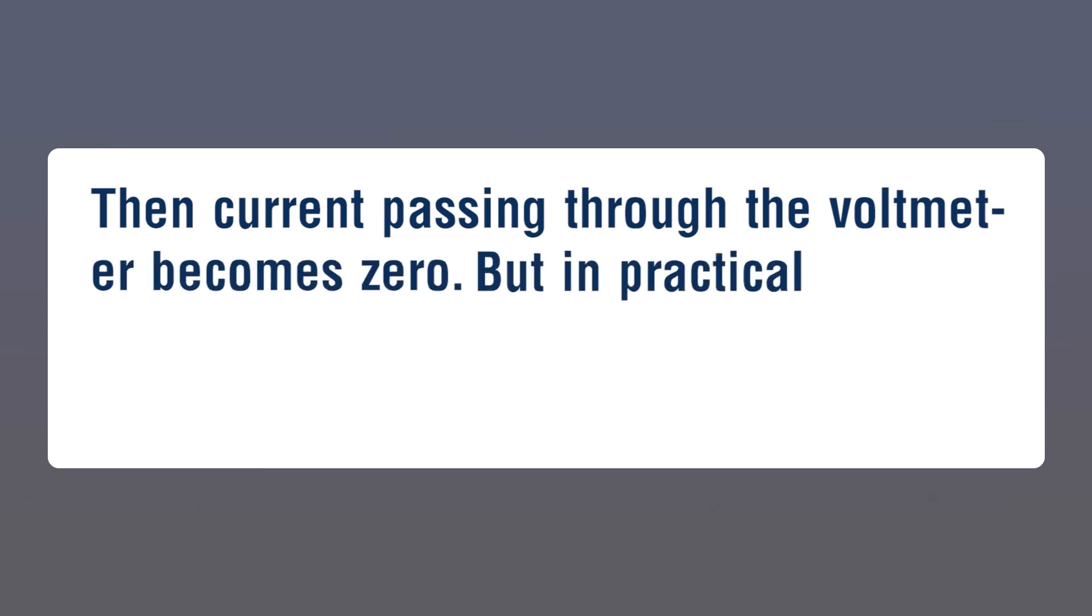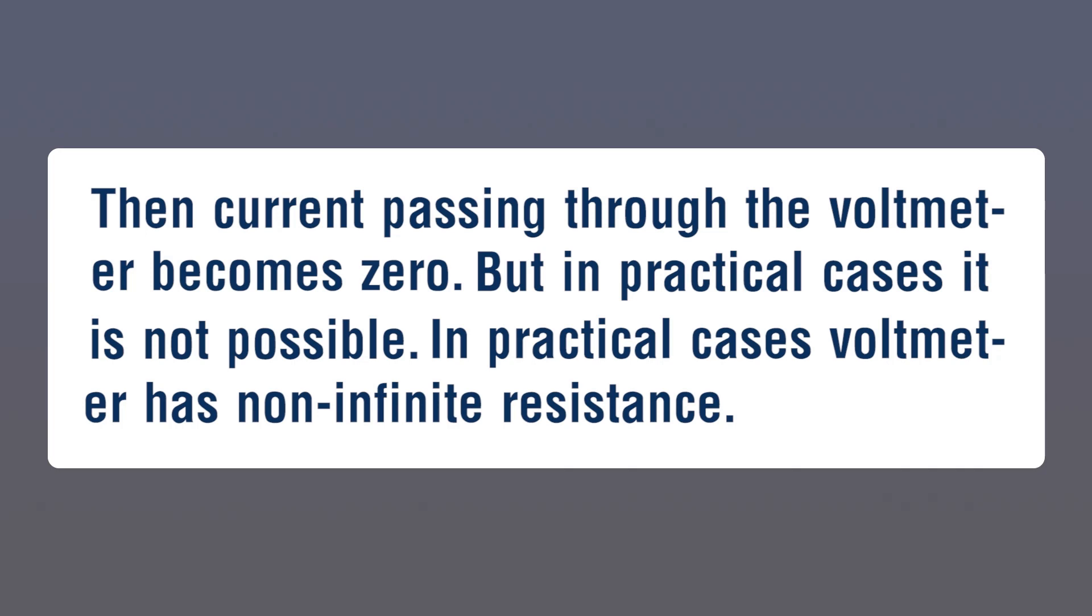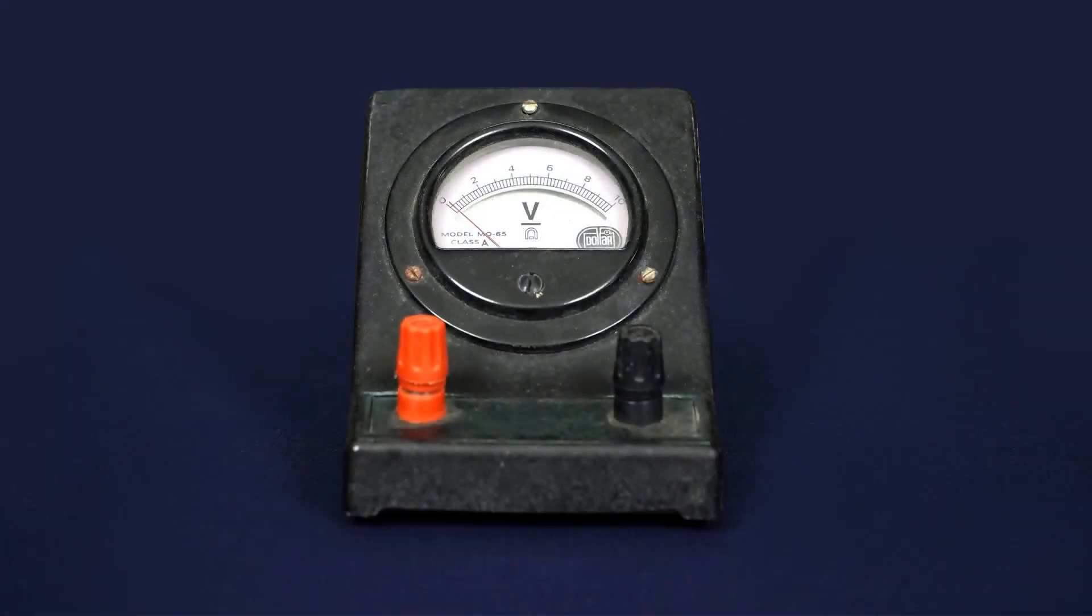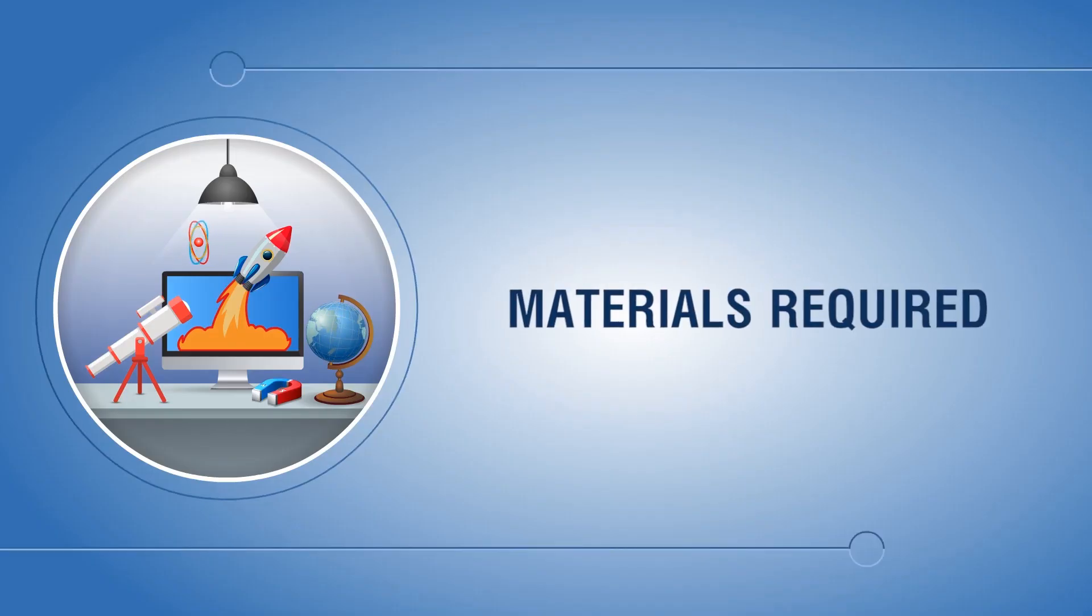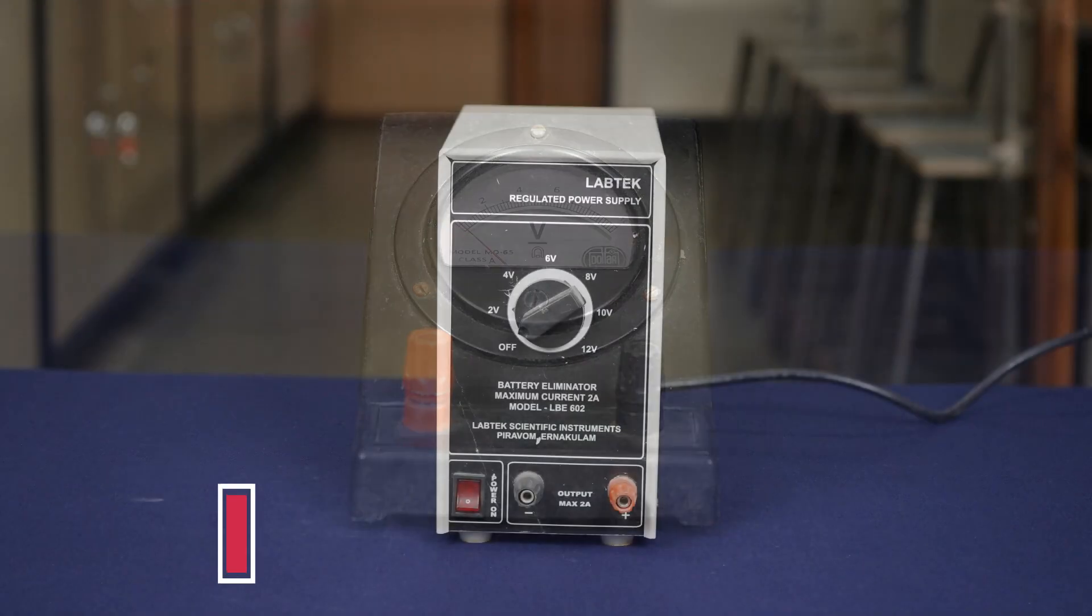Then current passing through the voltmeter becomes zero. But in practical cases, it is not possible. In practical cases, voltmeter has non-infinite resistance. Here we find the resistance of voltmeter. Materials required: voltmeter of 10 volt range, cell, key.